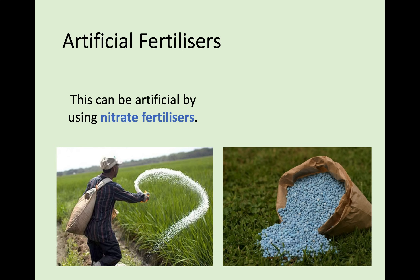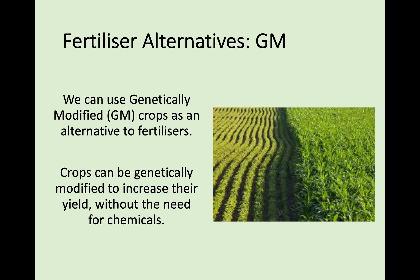The artificial method is using nitrate fertilisers. As you can see in the pictures, these come as pellets — artificial chemicals containing nitrate — and can be used to boost crop yield.